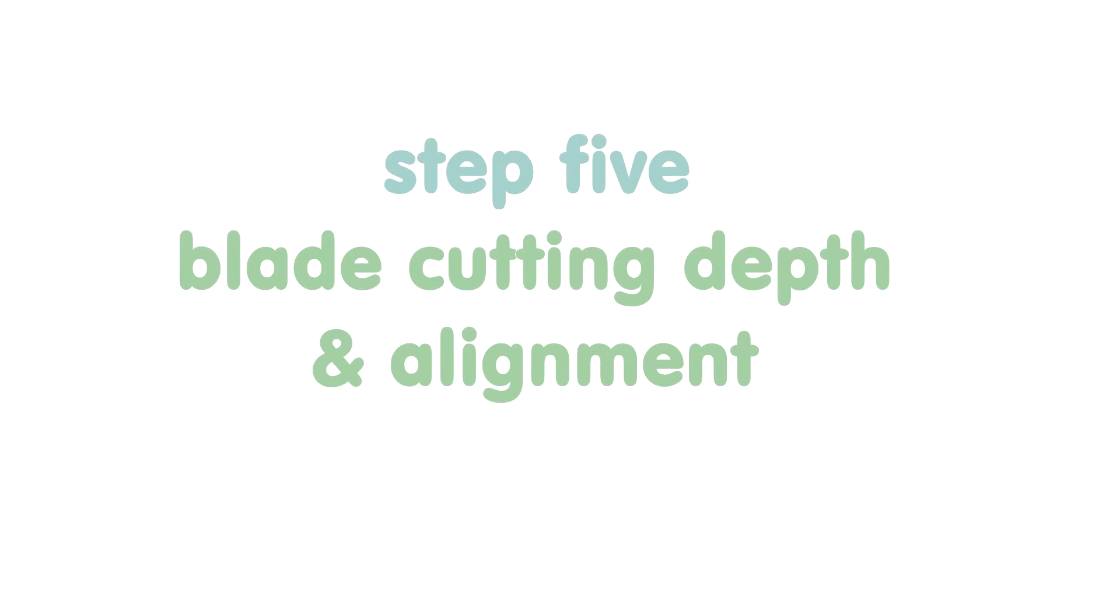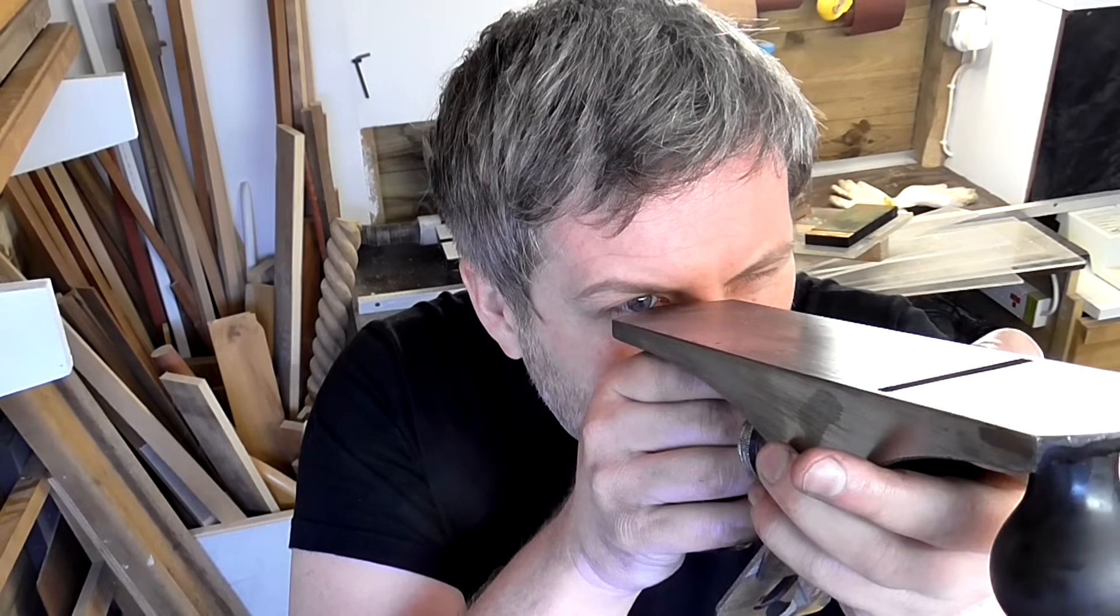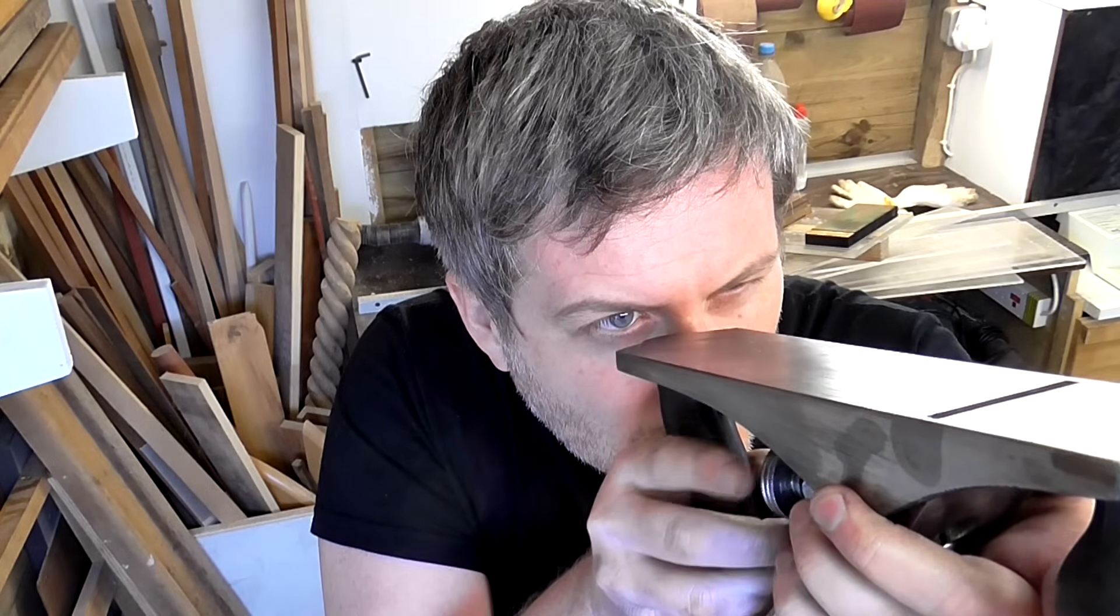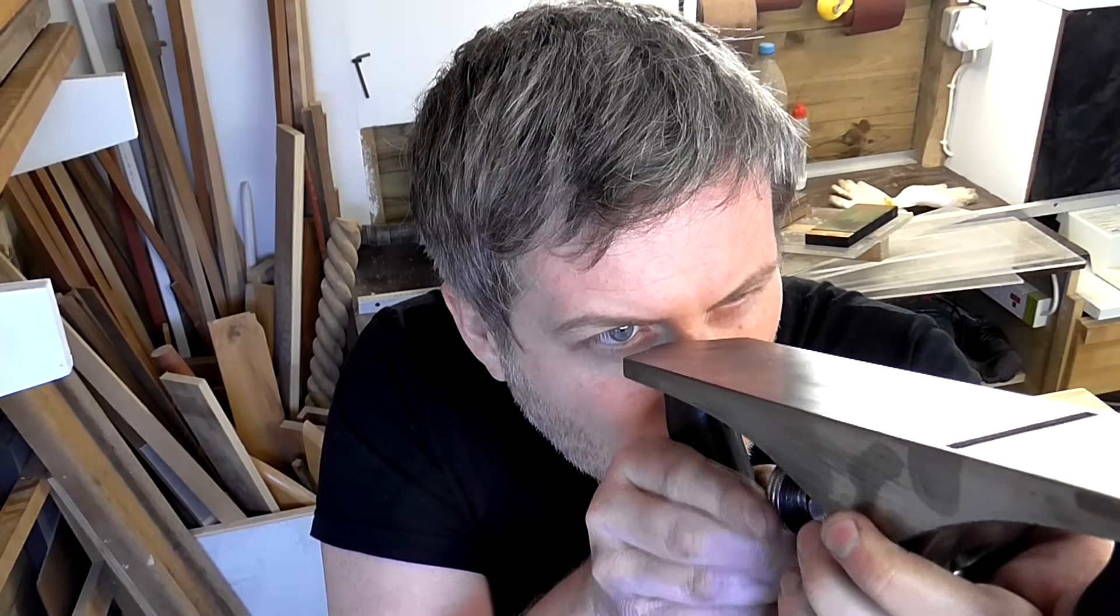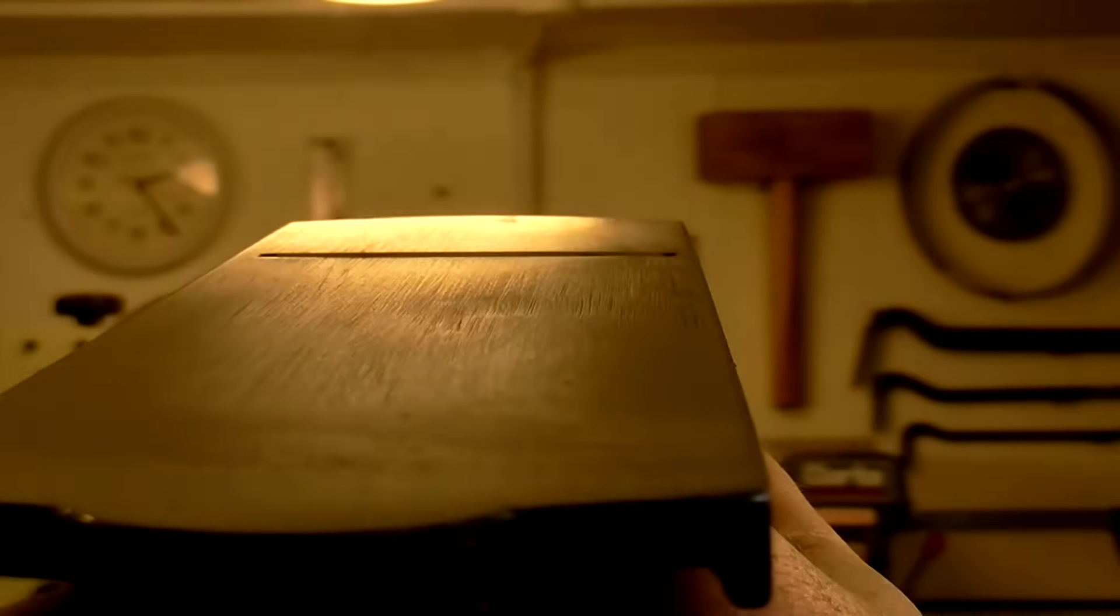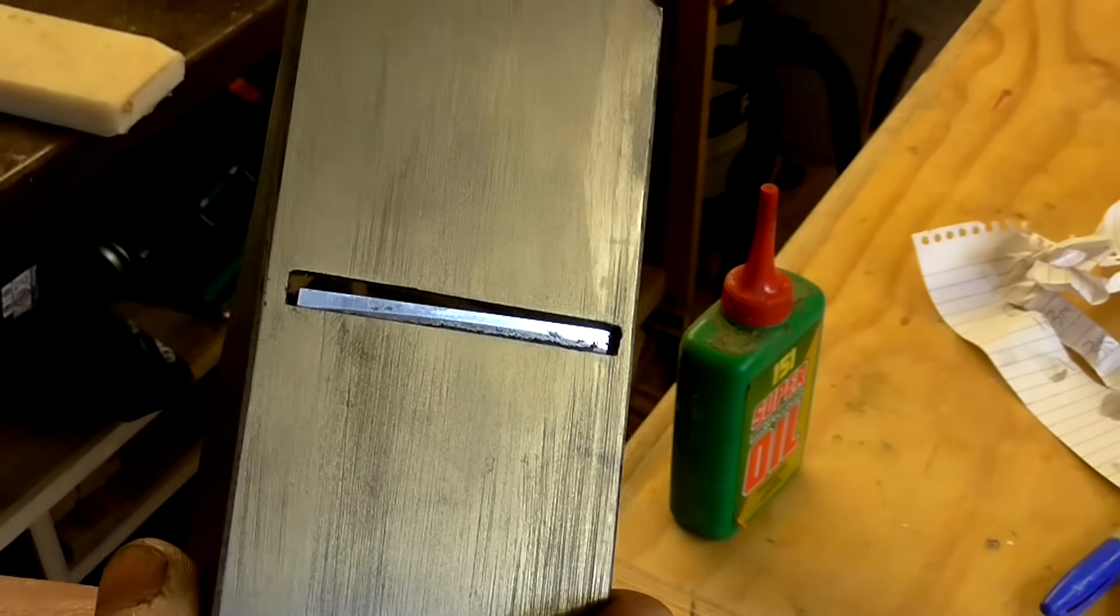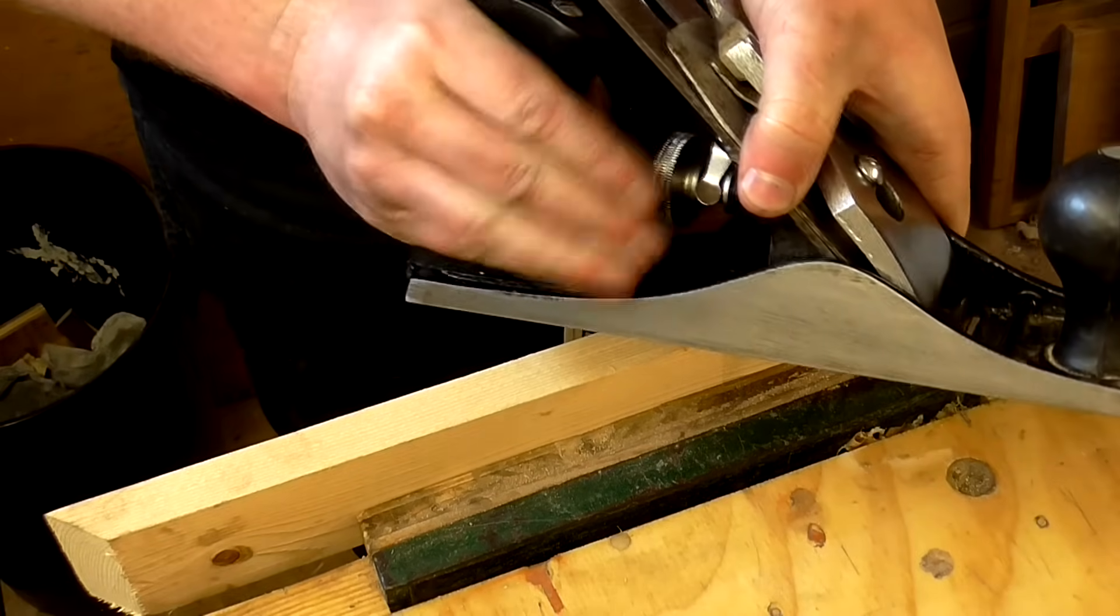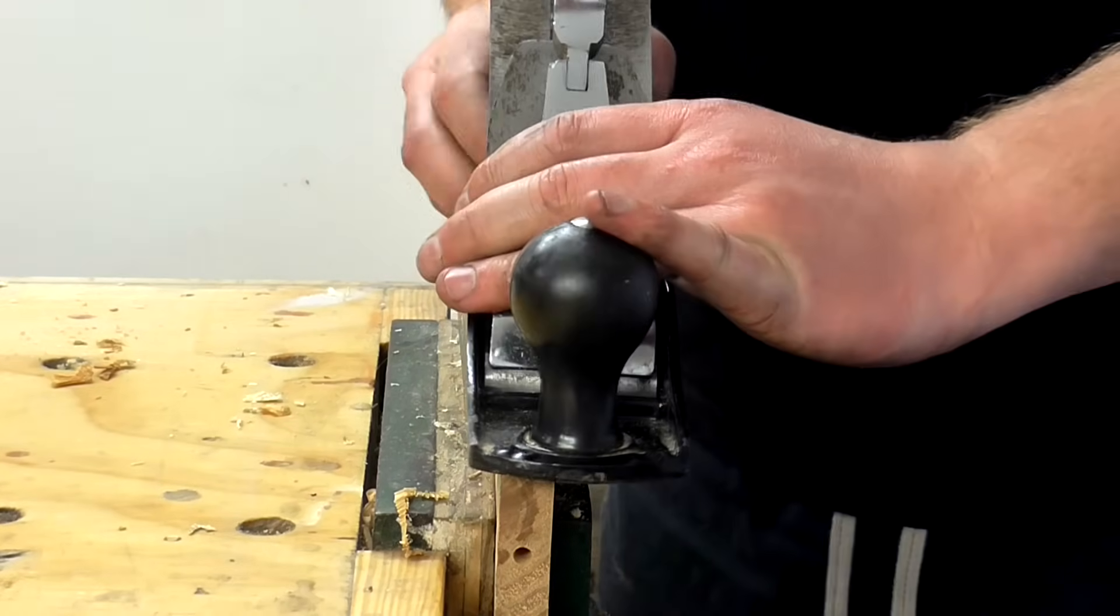Blade cutting depth and alignment. To set the blade cutting depth using the screw knob on the back, I hold the plane right up to one eye, aiming it towards a light. I close my other eye and sight down the length of the sole, turning the knob until I can see just the very tip of the cutting edge protruding from the mouth. If one side is protruding more than the other, then I use the alignment lever to angle the blade so that it's level and straight. Then I back off the blade by one or two turns and give it a try on a piece of wood, advancing the blade with each pass until I get a shaving.